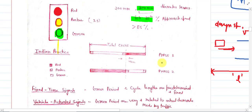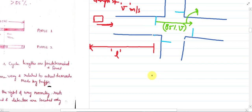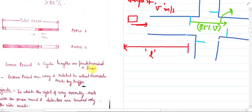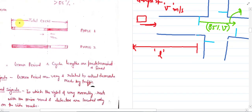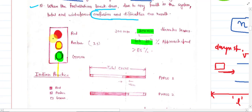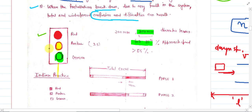Here is another diagram showing the total cycle. The total cycle is the total time taken to complete one full cycle: red light occurs first, then amber, then green, then amber again, then red. The time taken to complete this one cycle is known as the total cycle length.